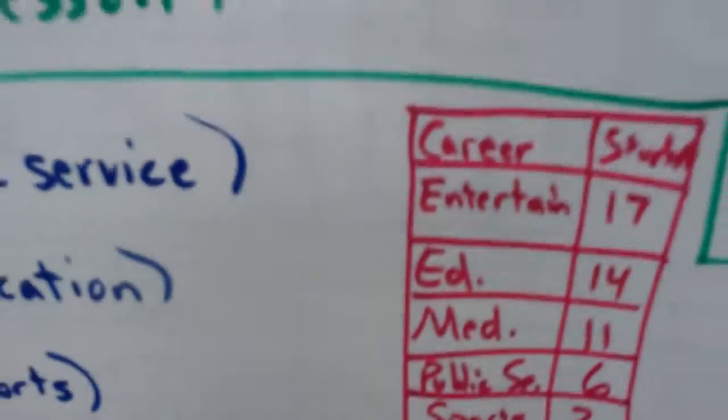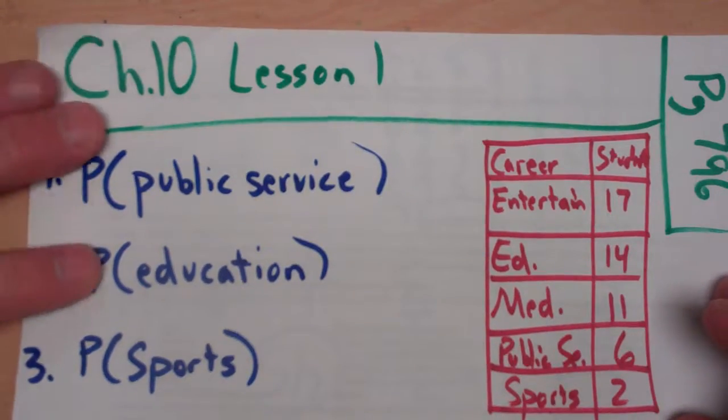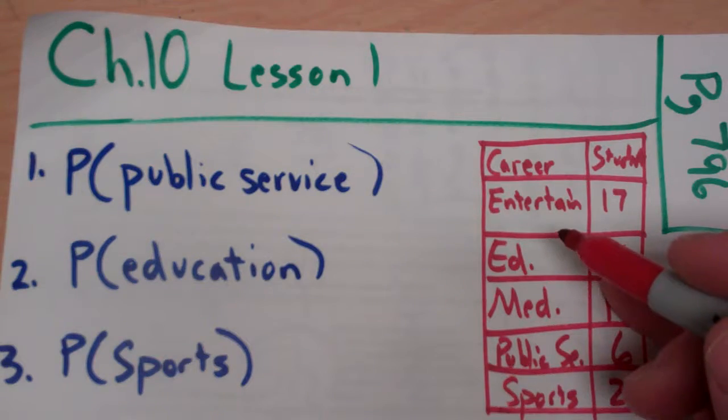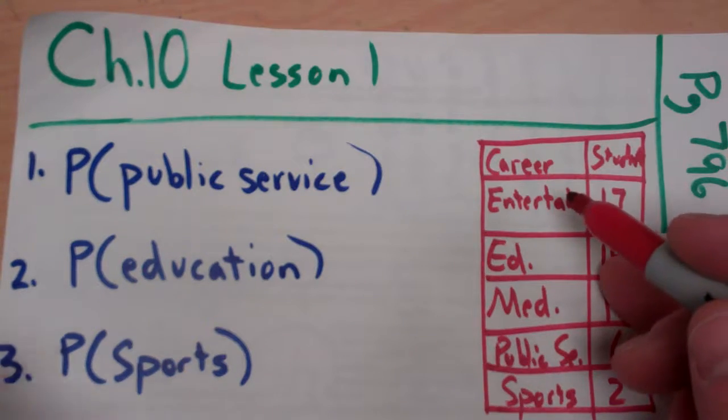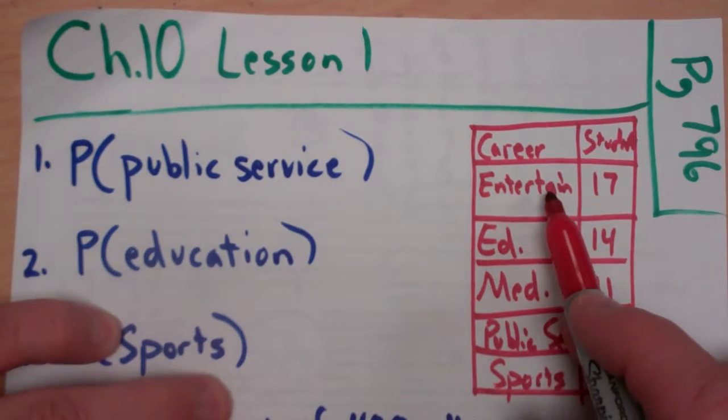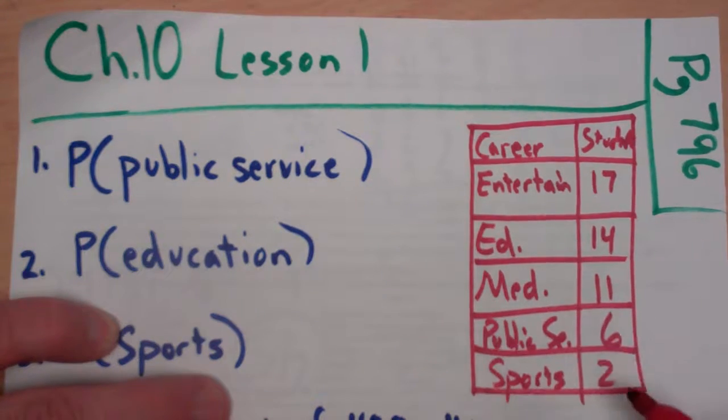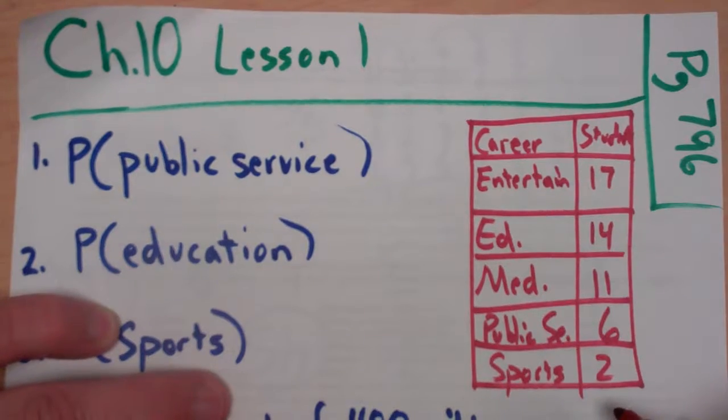All right, so I'll be doing the guided practice off page 796. So they have a survey here that is talking about the careers for different students out of a middle school. And they've taken a sample of students in this middle school and 17 students plan on having a career in entertainment, 14 in education, 11 in medicine, 6 in public service, and 2 in sports.